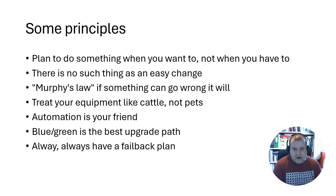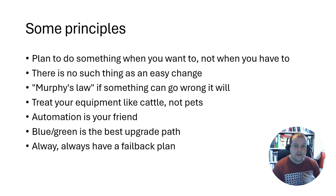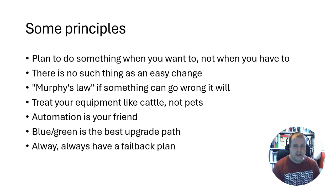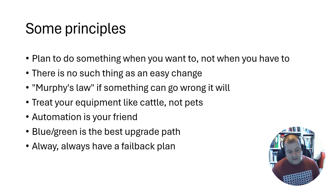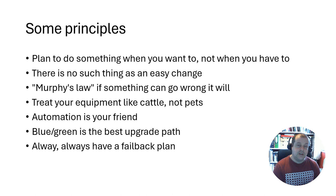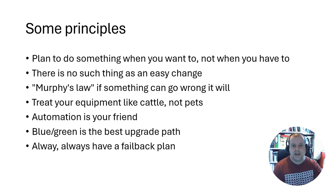Third: Murphy's Law — the one time you don't want something to go wrong is the time it does. When we're stressed and under pressure, we're more likely to make a mistake, which is why things tend to go wrong when we least want them to. Fourth — from Bill Baker, a Microsoft engineer — treat your infrastructure like cattle, not pets. With good automation, you should be able to spin up a new server with almost no effort by running a script, Ansible, Puppet, Chef, or whatever. You shouldn't be manually tweaking individual servers on the command line.